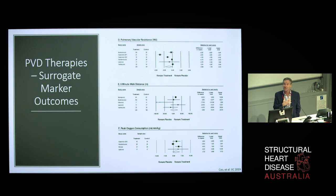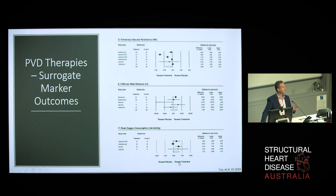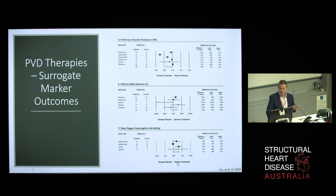You've got to have the courage to say: you have a disease I cannot treat. This is a meta-analysis of every paper published about treatment of pulmonary vascular disease in people with pulmonary hypertension. If you look at the surrogate markers — pulmonary vascular resistance, walk distance, or peak oxygen consumption — everything favours treatment. But what actually happens to the patients? They die. All-cause mortality, cardiovascular mortality, heart failure worsening — all favour placebo.